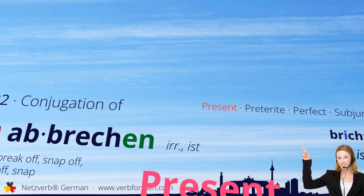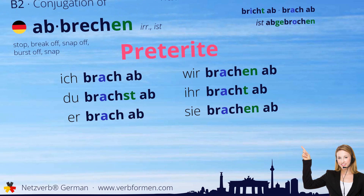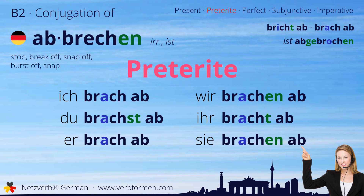Next up is the preterite: ich brach ab, du brachst ab, er brach ab, wir brachen ab, ihr bracht ab, sie brachen ab.